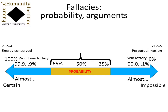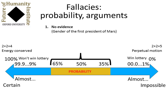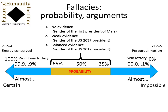There are three different reasons that something can be in this range, and it's important not to mix them up. The first reason is that we have no evidence one way or the other, such as the gender of the first president of Pluto. A second reason is that we have weak evidence, such as the gender of the US president in 2037 — we can present some arguments, but it's not pushing us strongly towards either end. The third reason is that we could have finely balanced evidence, like our current belief as to the gender of the US president in 2017, where quite strong arguments exist on both sides and they are roughly balanced in the 65 to 35 percent range.